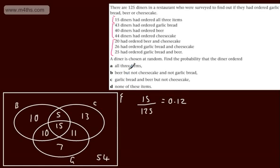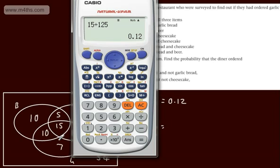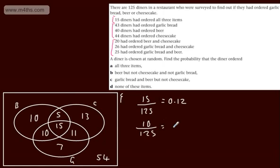Then the next one, beer but not cheesecake and not garlic bread. Well that's going to be just here. And that's going to be now 10 over 125. So if you want an answer for that one, all we're going to do now is do 10 over 125, which is going to be 0.08.